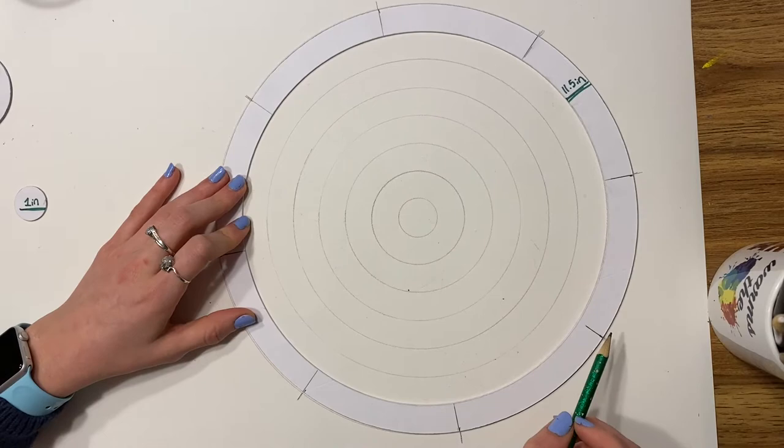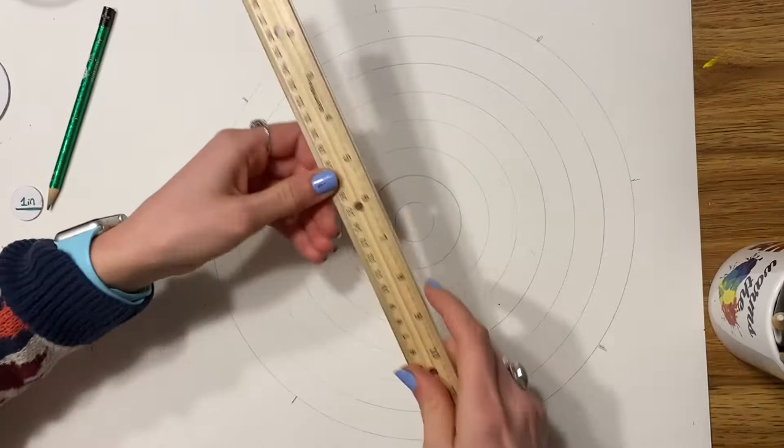Using a ruler, we are going to connect the lines across. Make sure you're using a pencil and lightly tracing. These lines do not need to be dark.